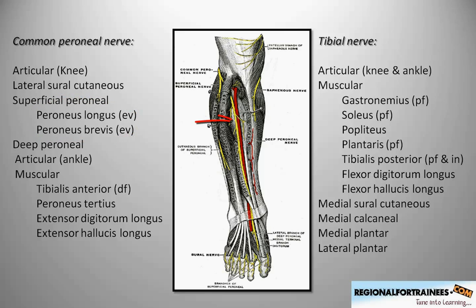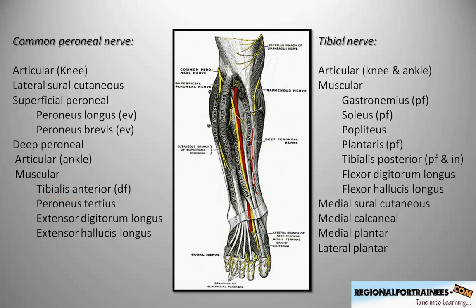The deep peroneal nerve supplies articular branches to the ankle. More importantly, it supplies various muscular branches, the most important being tibialis anterior, which is a dorsiflexor as well as an inverter. So that is important to remember.